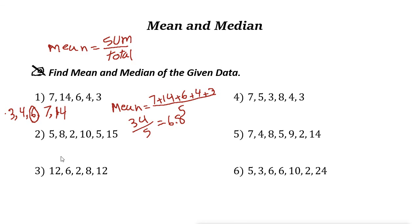For the next example, the average is 5 plus 8 is 13, plus 2 is 15, plus 10 is 25, plus 5 is 30, plus 15 is 45. We have 6 numbers, so 45 divided by 6. The average is 7.5.